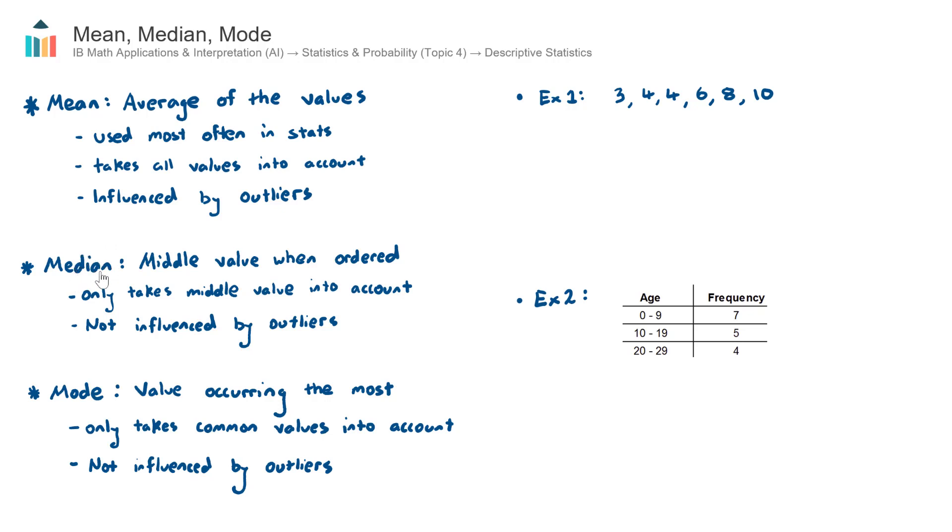The median is the middle value when ordered in ascending order, from smallest to largest. It only takes the middle value into account, which can be considered both a positive and negative. But one positive is that it is not influenced by those real outliers, like Bill Gates' bank accounts or the mansion on the corner block. This is why house prices are often quoted as the median.